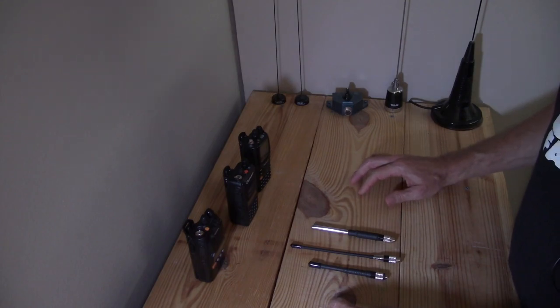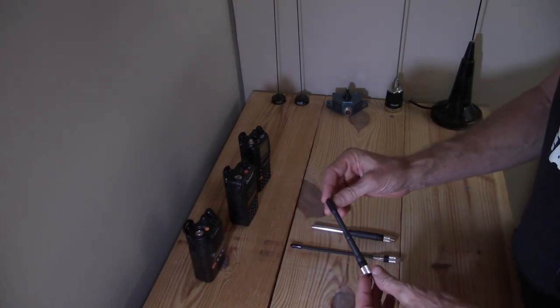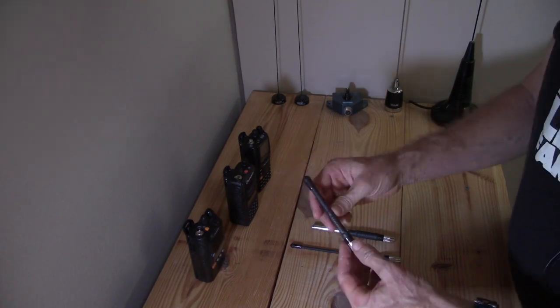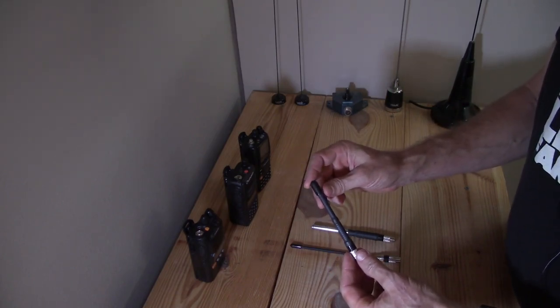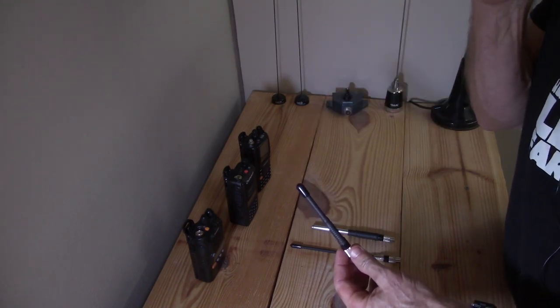What's missing is what they call a mini or stubby duck. It's a real small 5/8 wave antenna. This one is what they call the slim duck, which is a longer version. And this one I've used for a few months. I was really impressed with the performance of it comparing some other antennas with some other radios.